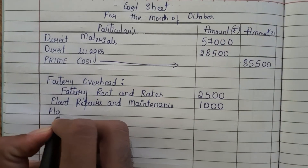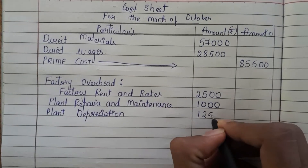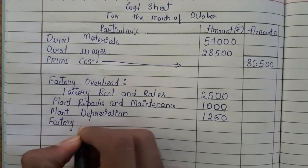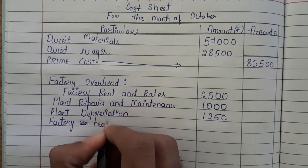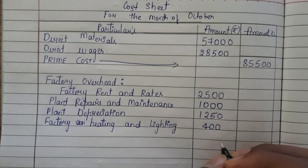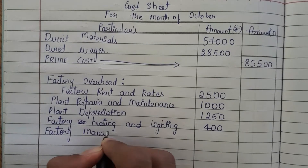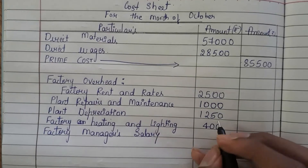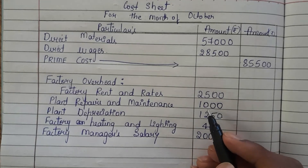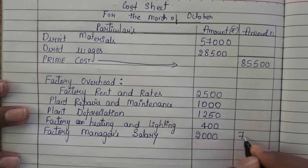Next is plant depreciation, which is also related to factory overhead. Plant depreciation is 1,250. Next, factory heating and lighting is 400 rupees. Next, factory manager's salary — in order to maintain a factory, a manager is required and we have to pay him a salary. That factory manager's salary is also related to factory expenses, so we show it under factory overhead — it is 2,000. Now add 2,500, 1,000, 1,250, 400, and 2,000. You will get a total of 7,150.